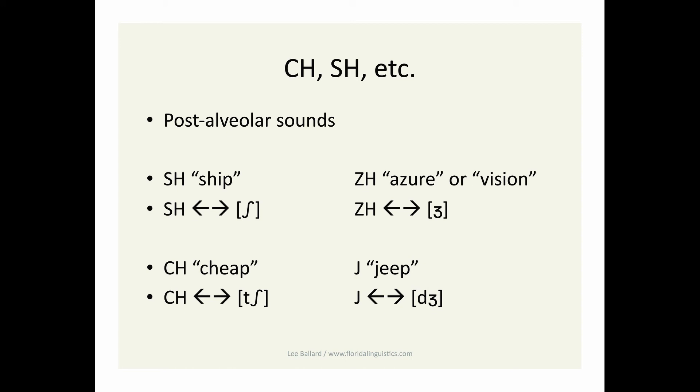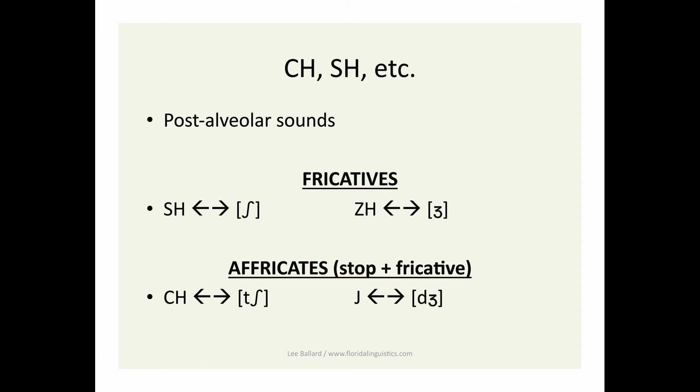This combination of stop plus fricative of identical voicing at the same or very close place of articulation is called an affricate. You may have heard of diphthongs, which is when vowels combine together. The consonant version of that is affricates. Ship and cheep are voiceless, while azure and jeep are voiced.